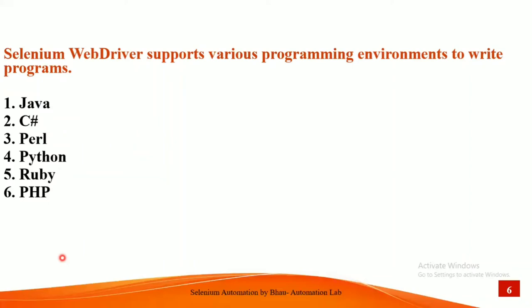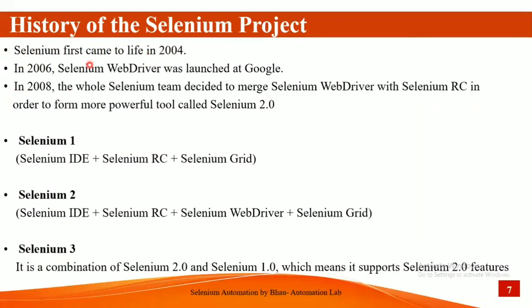Selenium supports various programming languages including Java, C#, Perl, Python, and Ruby. Now let's talk about the history of the Selenium project. Selenium first came to life in 2004, and in 2006 the Selenium WebDriver was launched at Google.